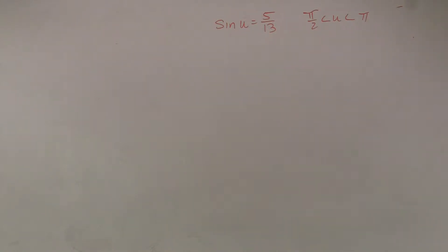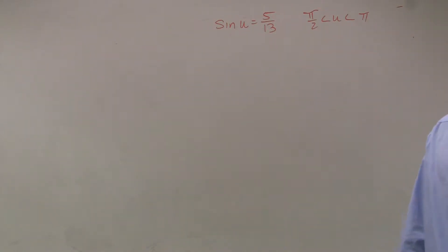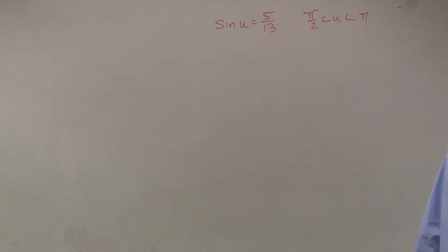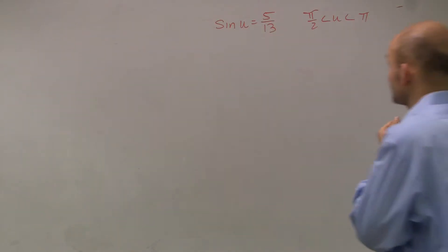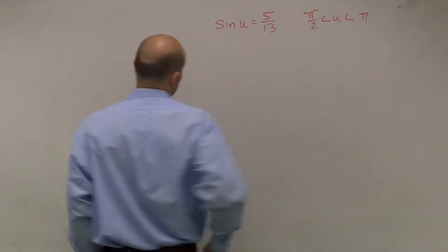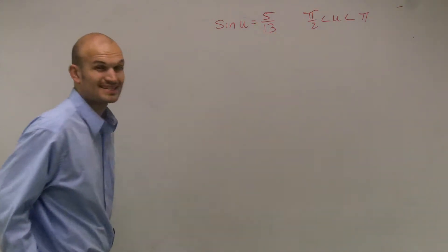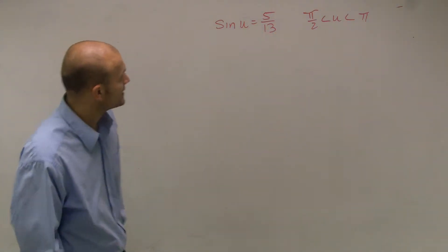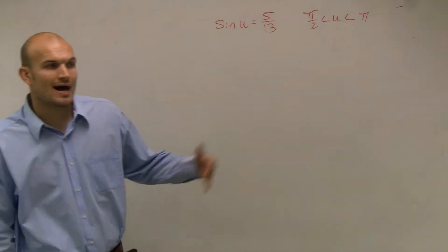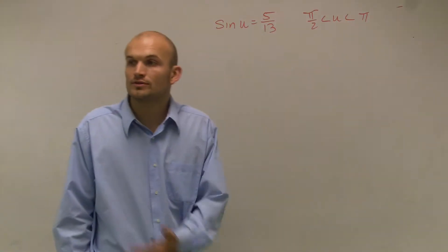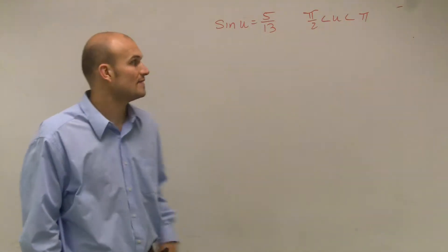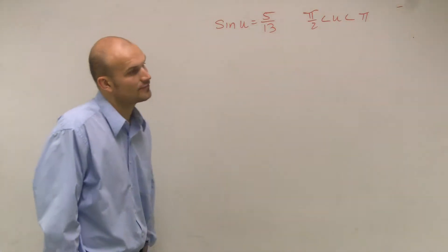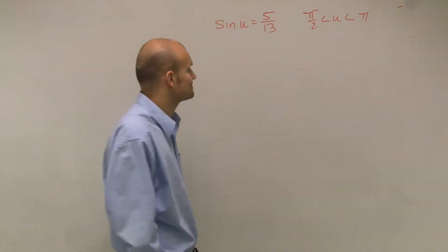For this problem, they're asking us to find the exact values of the half angle value for cosine using the half angle formulas. What I've been given is sine of u equals 5 over 13, and I need to figure out what the cosine is in order to use the half angle formula for cosine.